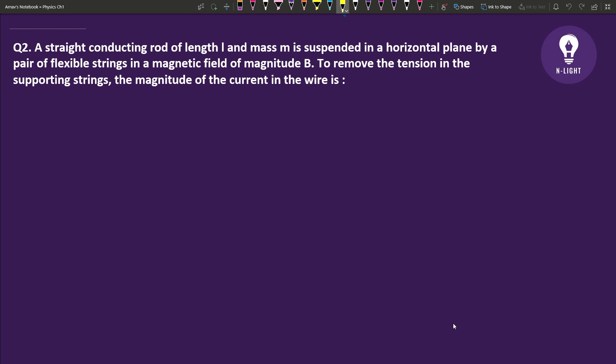We have given a straight conducting rod of length L and mass M suspended in a horizontal plane by a pair of flexible strings in a magnetic field of magnitude B. To remove the tension in the supporting strings, the magnitude of the current in the wire is what?